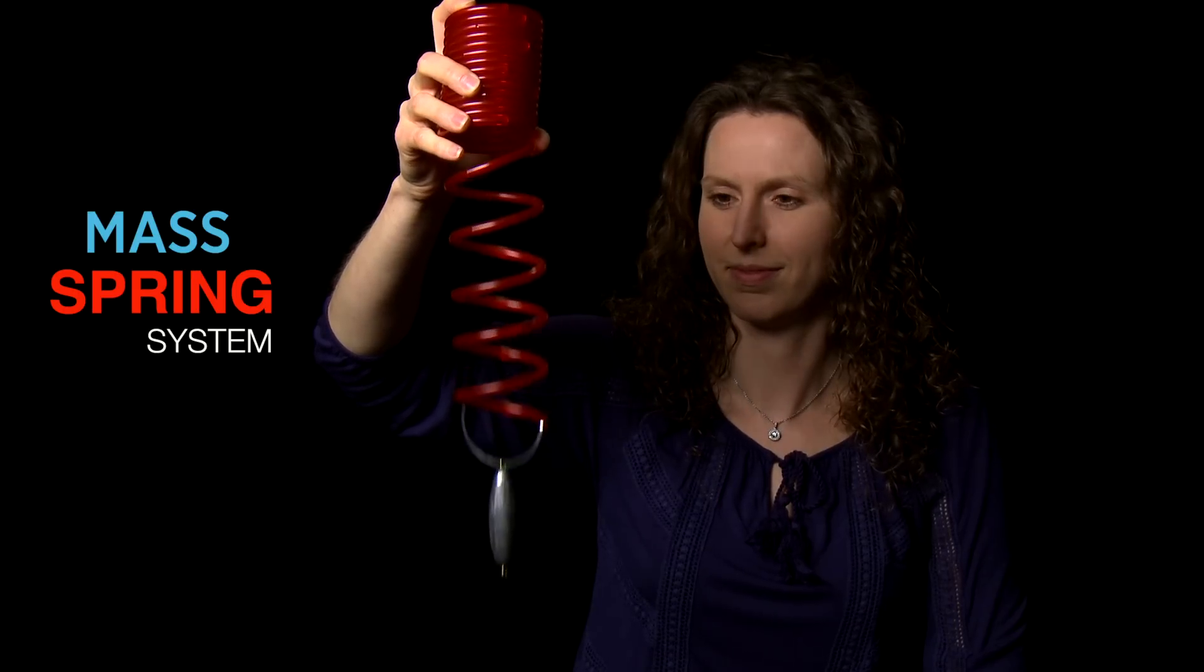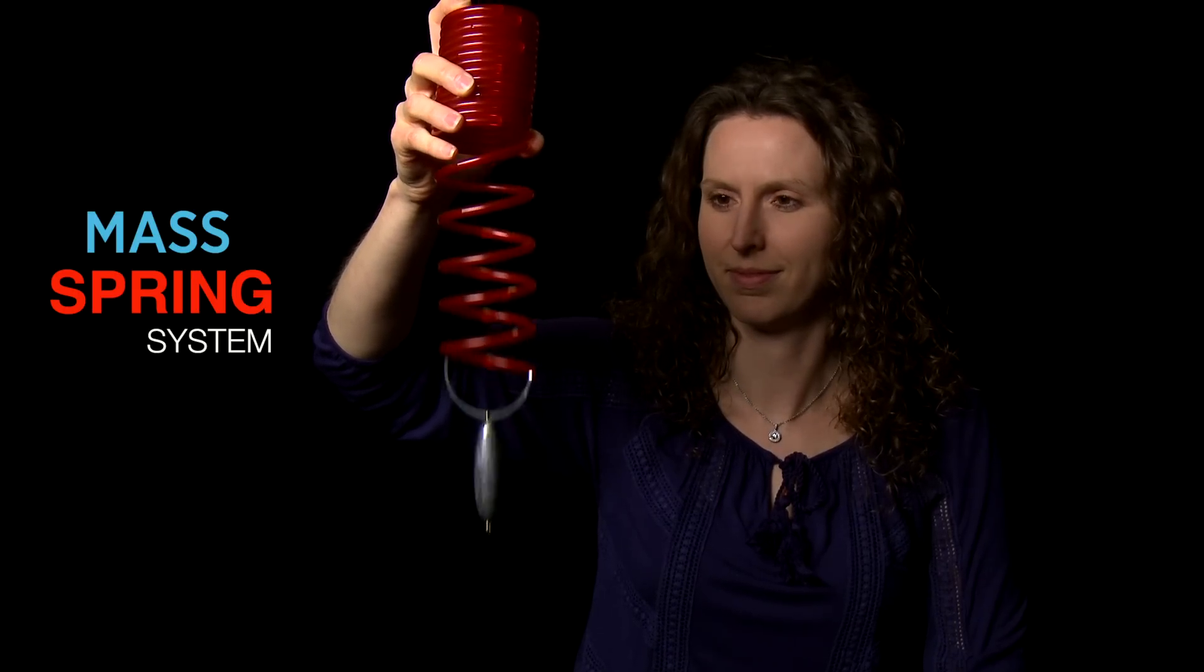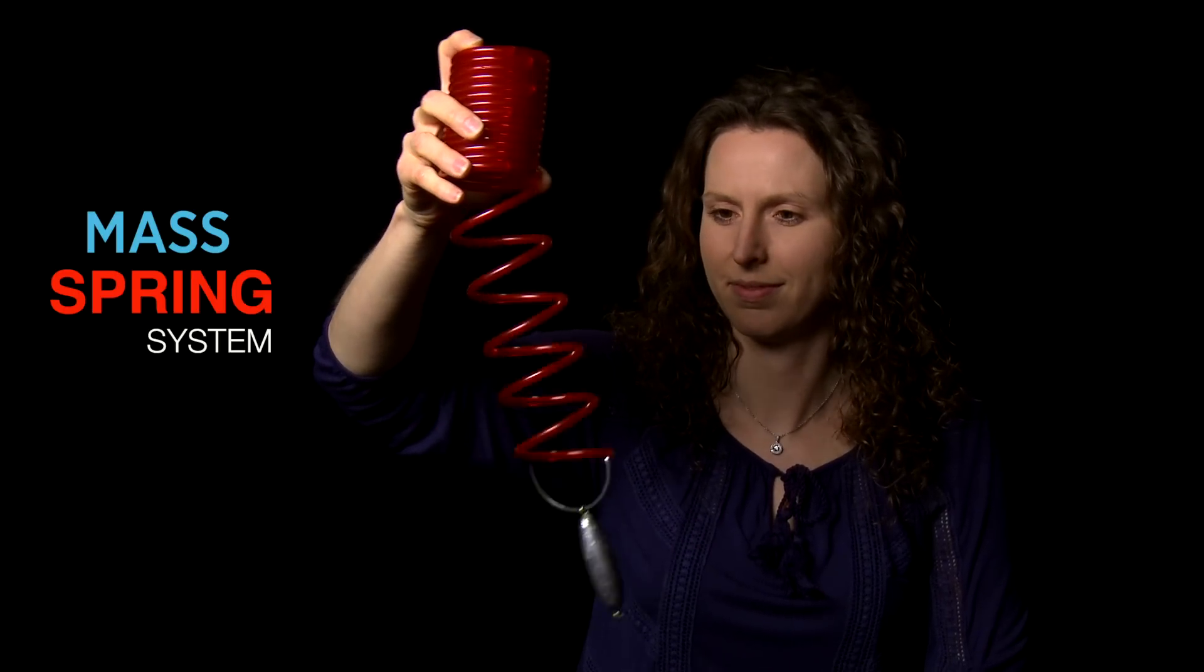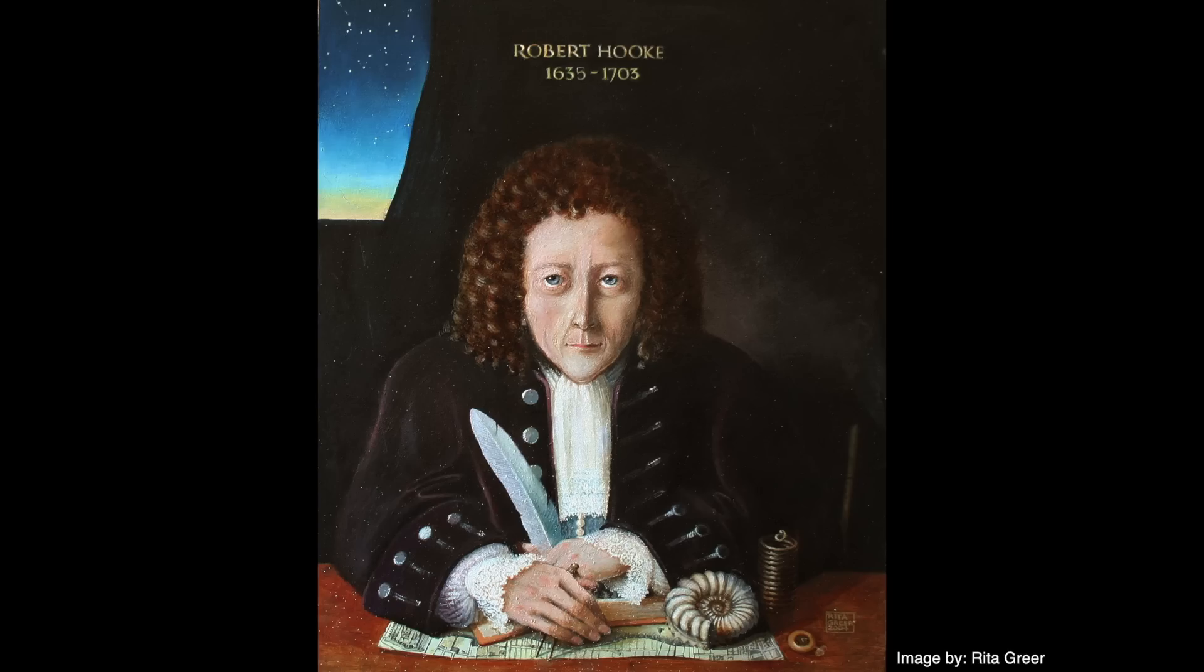We can actually draw a mathematical model to explain what happens when a spring expands and contracts. The model we use is based on a law developed by Robert Hooke, a 17th century physicist.